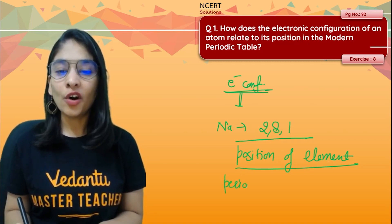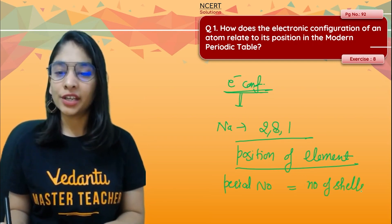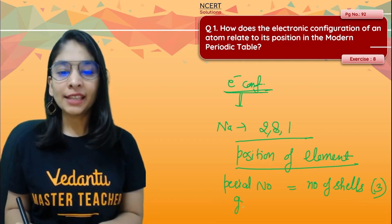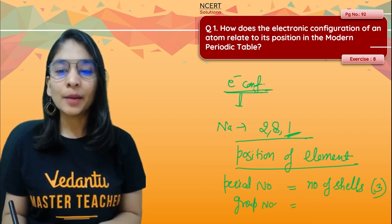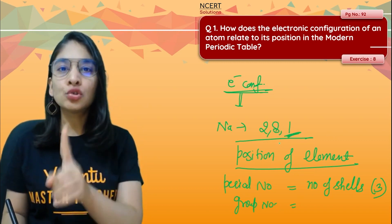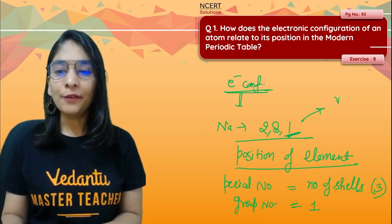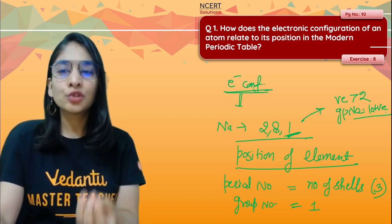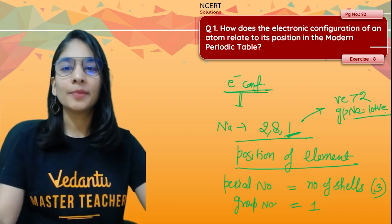The period number corresponds to which horizontal row the element is in — that is the total number of shells present while writing the configuration. For sodium, there are three shells, so sodium belongs to the third period. The group number corresponds to which vertical column the element is in, decided by the valence electrons. If there are one to two valence electrons, the group number is the same as the valence electrons. If the valence electron count is more, the group number is 10 plus the valence electrons.